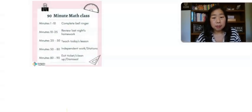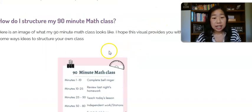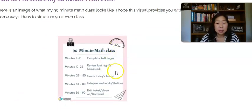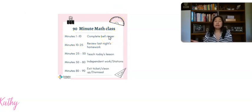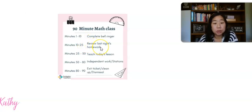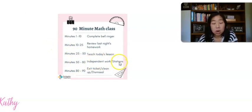Let me show you a visual of how I structure my 90-minute class. Minutes 1 through 10: students complete a bell ringer, which takes about seven to ten minutes. Minutes 10 to 25: we review last night's homework — I take questions and go over the homework. Minutes 25 to 50: I teach today's lesson, spending about 20 to 25 minutes on direct instruction. Then minutes 50 to 80: independent work or stations.